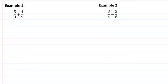Let's take a look at example one. We have five-thirds and four-ninths. They do not have a common denominator. I usually like to rewrite them so that they are vertical, because it makes it a little bit easier when I'm getting the common denominator.